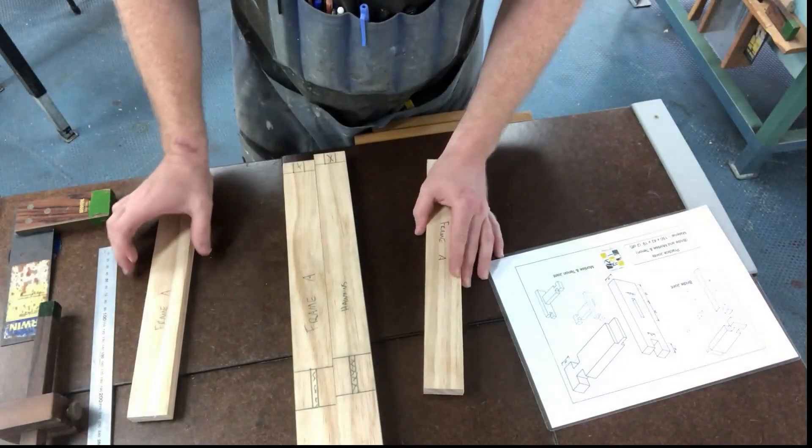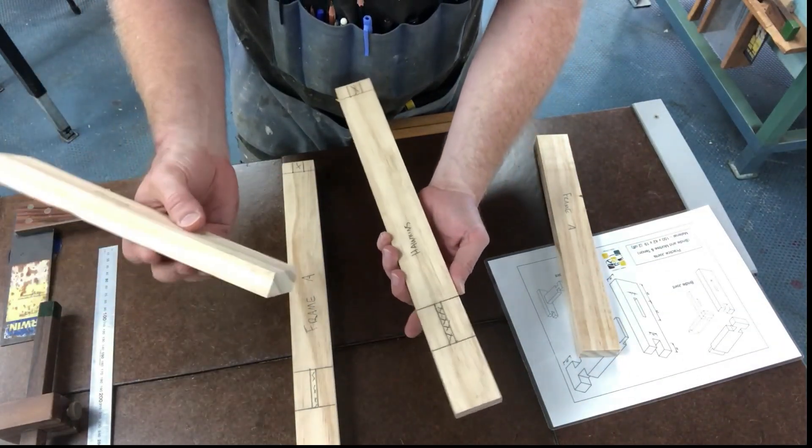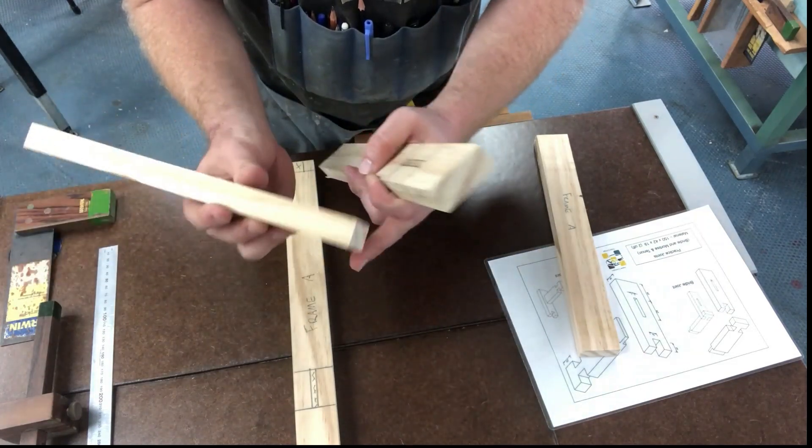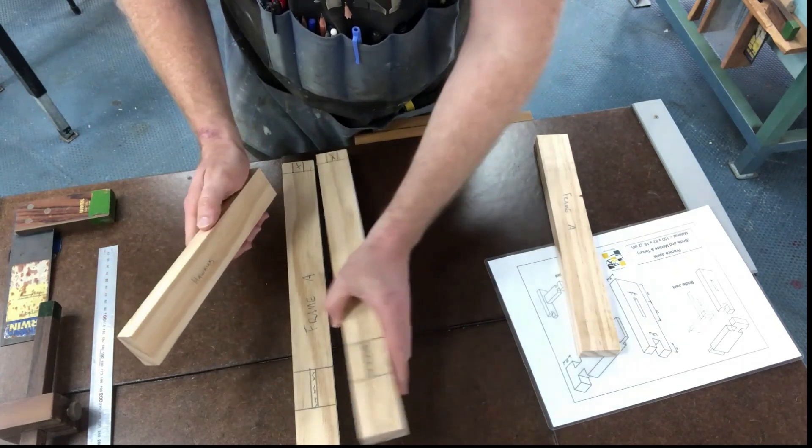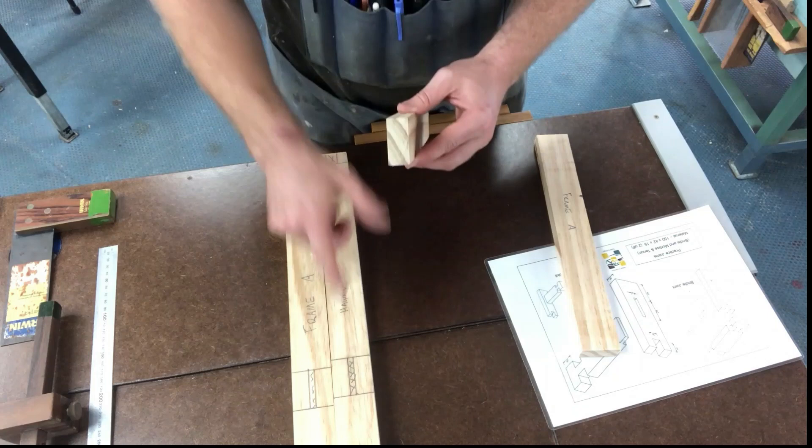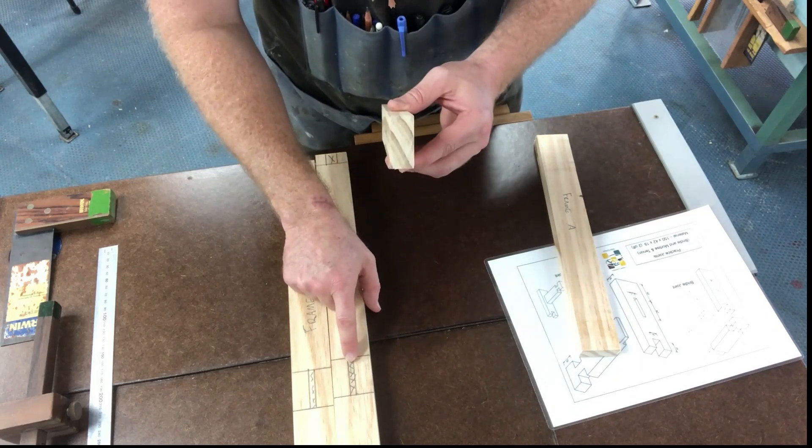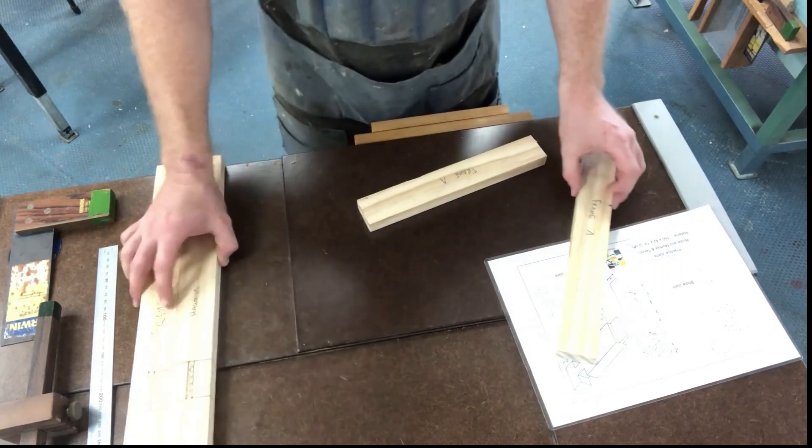The next thing to mark out is the tenon. The tenon is the other half of the mortise and tenon, and we're going to cut out our tenon here which will slot into the mortise there. Now when we mark this out, the tenon will have to be 6mm because our mortise here is 6mm, and let's start marking this out.